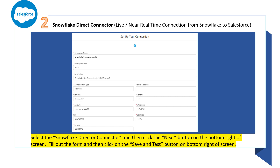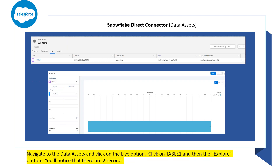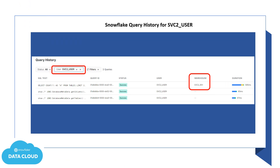Now let's repeat the process to create a new connection, but this time let's create a live Snowflake direct connector. This time when you select edit objects, the only thing you'll need to do is select an Analytics Studio app — I chose my private app. When you navigate to the data assets and click on the live option, you'll want to click on table 1 and then the explore button, which will show that you have two records from the live connection to Snowflake that you can now explore. Once again, make your way back to Snowflake to see the activity as a result of what you did by creating the live connection in Salesforce.